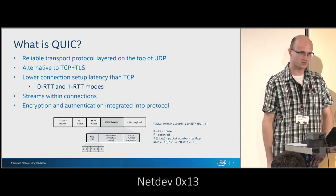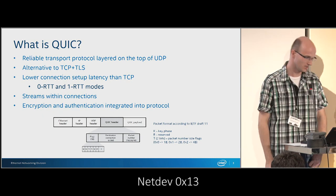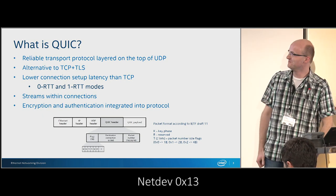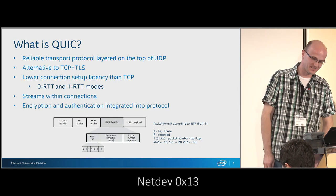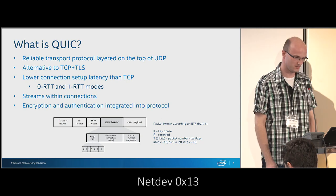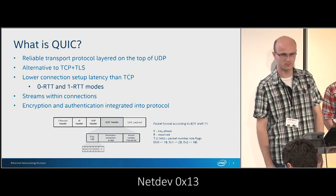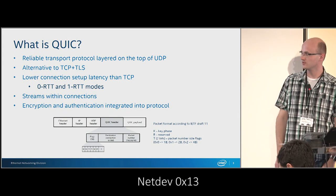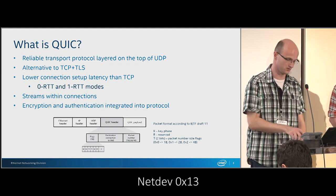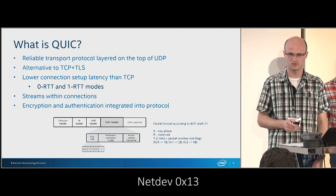So what is QUIC? QUIC is a reliable transport protocol layered on top of UDP. It's an alternative to TCP with TLS, with lower connection setup latency. It supports zero round-trip time with session resumes for connections that were already established, and one round-trip time for new connections. It supports streams within connections and has embedded encryption and authentication.